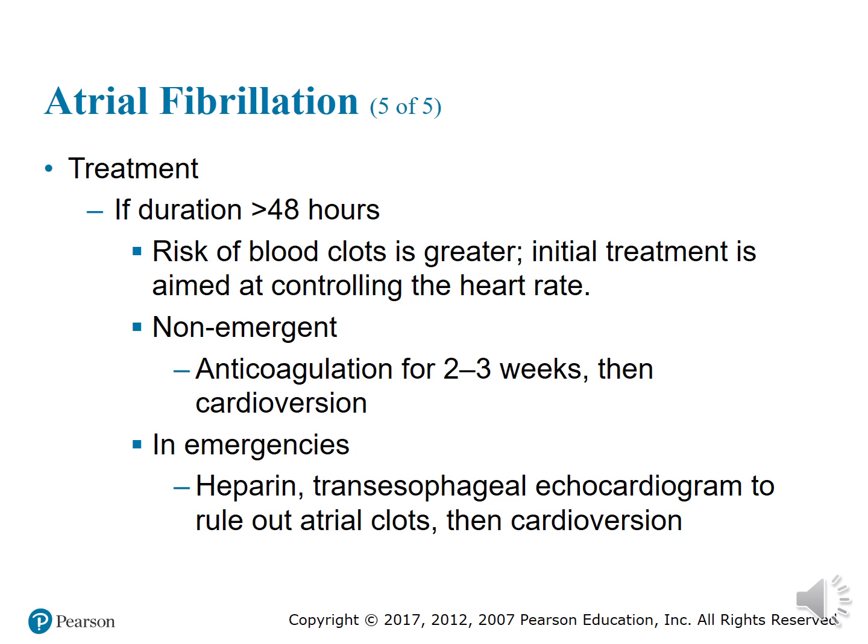If duration is greater than 48 hours, you have a greater risk of a blood clot, so initial treatment is aimed at targeting and slowing the heart rate. Non-anticoagulants are given for two to three weeks, then cardioversion if the AFib doesn't correct itself. In emergencies, heparin — a blood thinner — may be given to address the clotting issue, followed by cardioversion to reset the heart back to normal sinus rhythm.